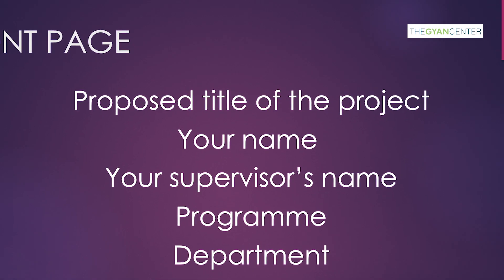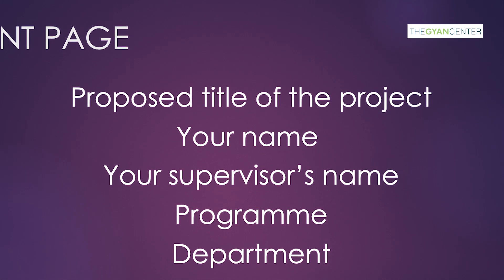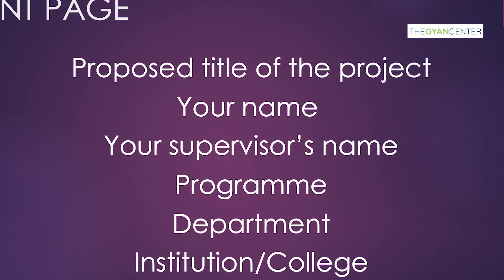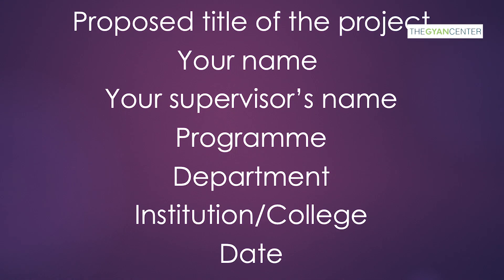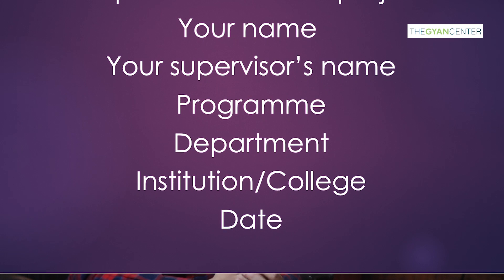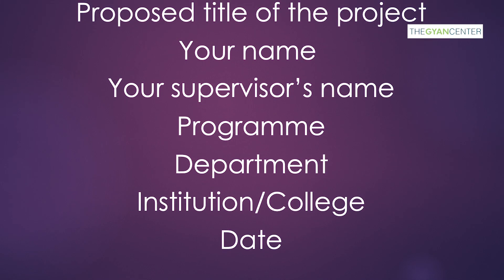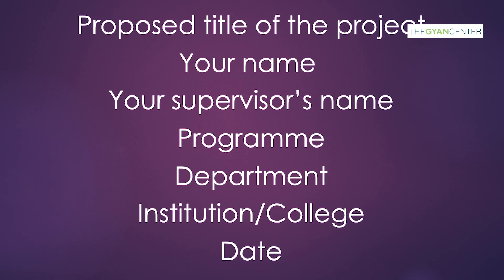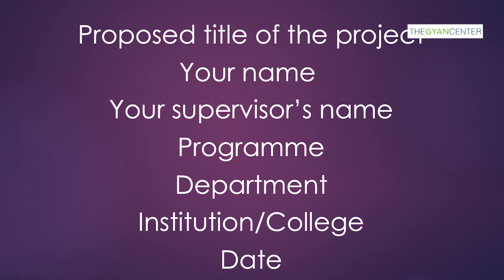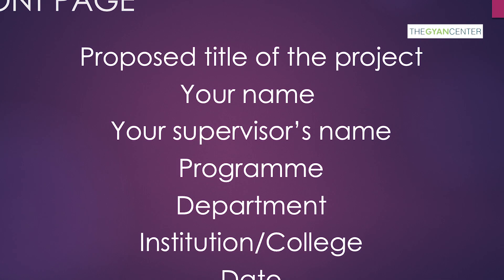In this video, you will see 4 content sections and a front page. On the front page, you will have the title of your proposal and your full name, the name of your immediate supervisor, the name of your program, the name of your institution or college, the name of your university, and at the end of the front page, the date of submission.